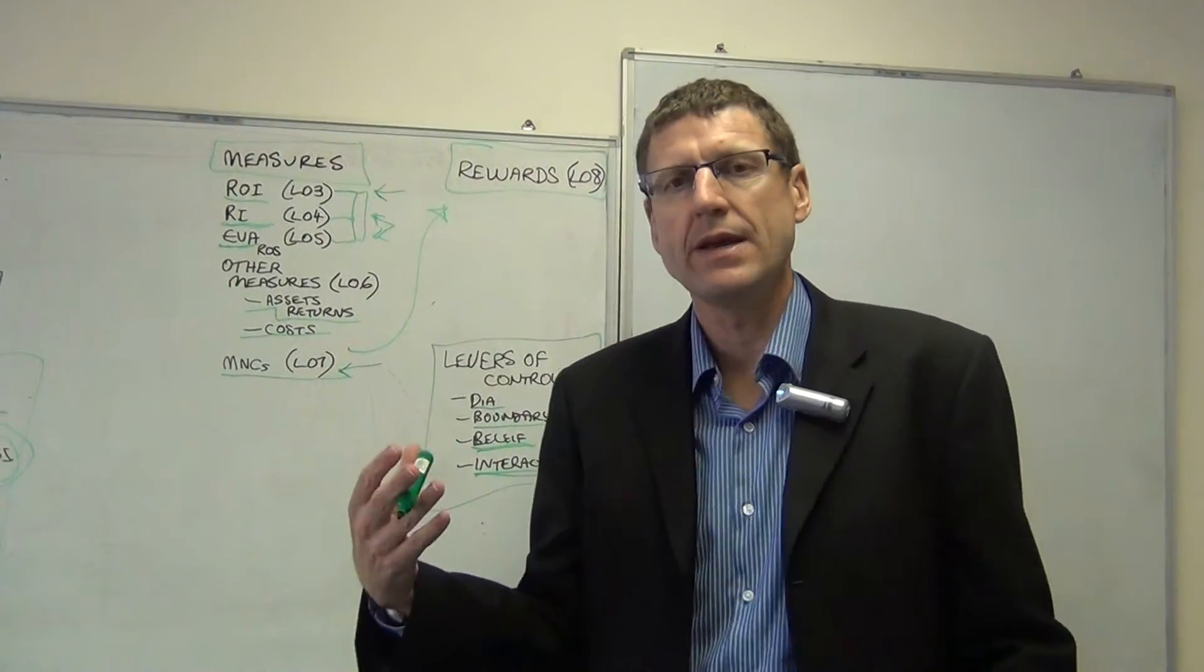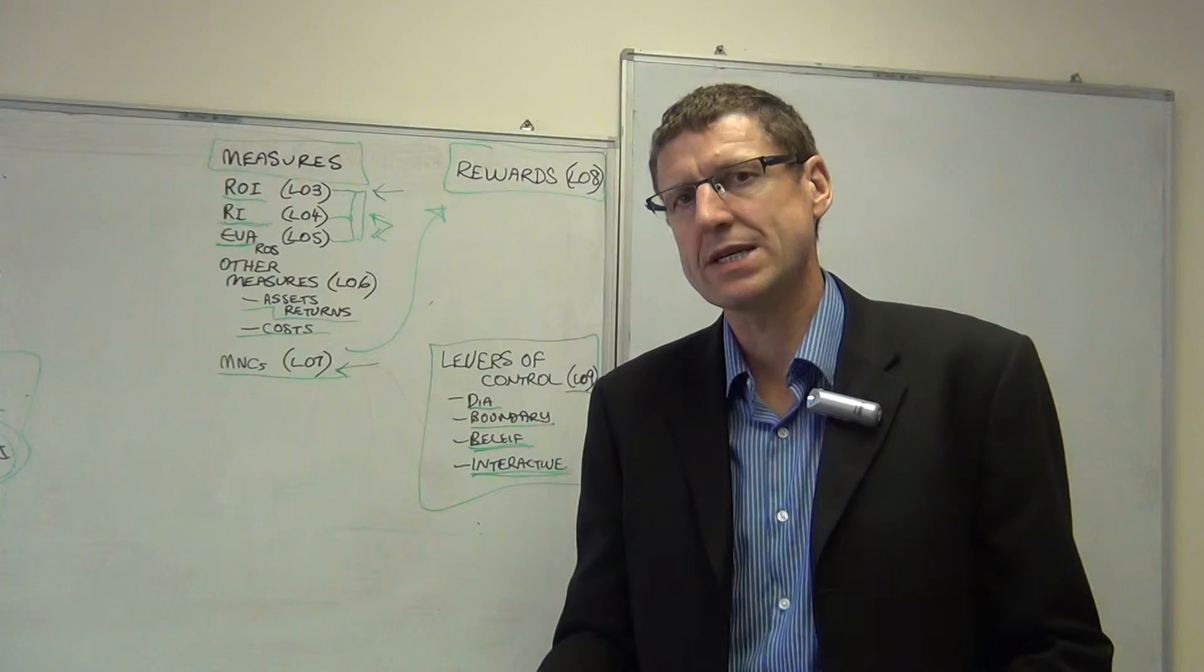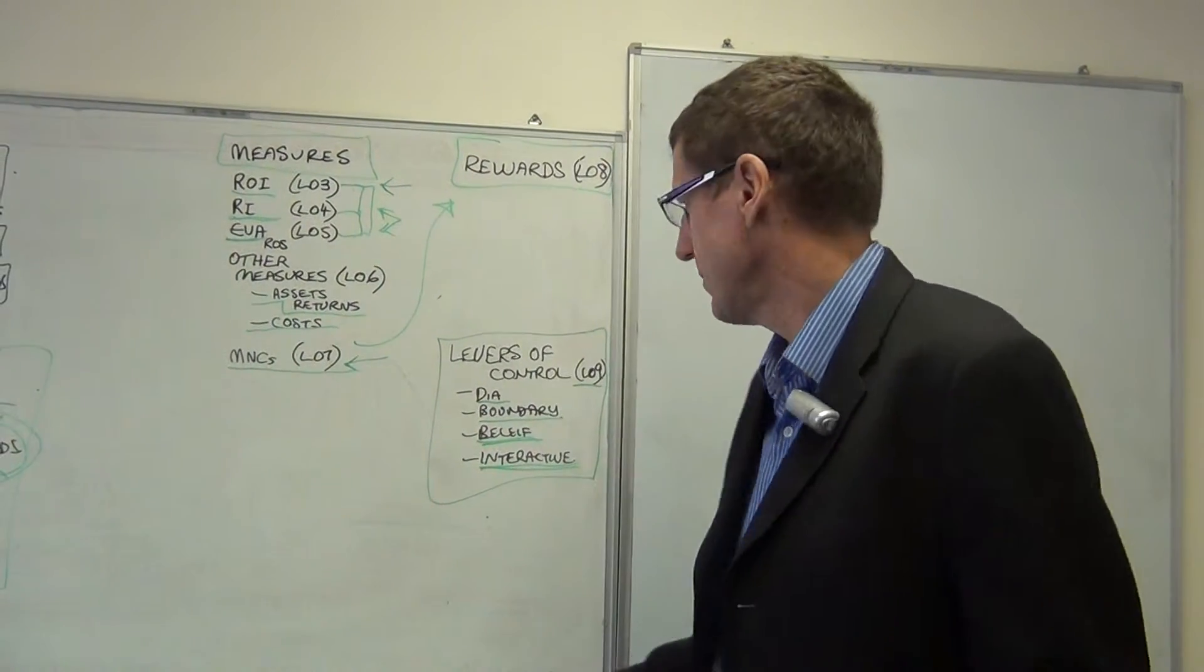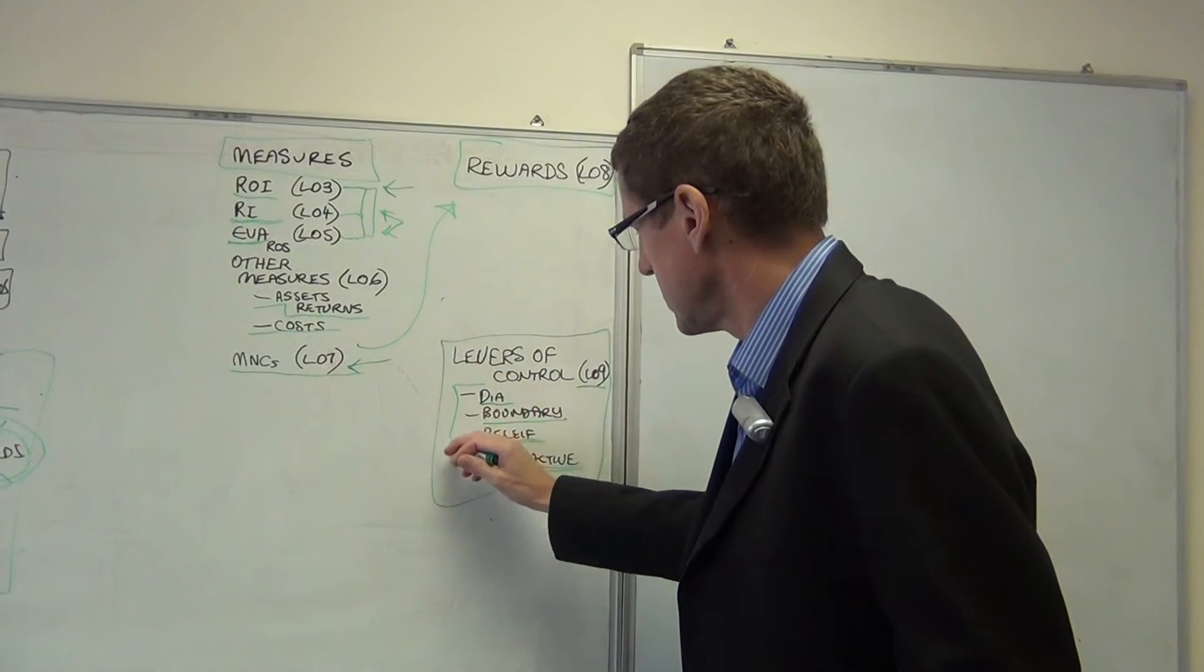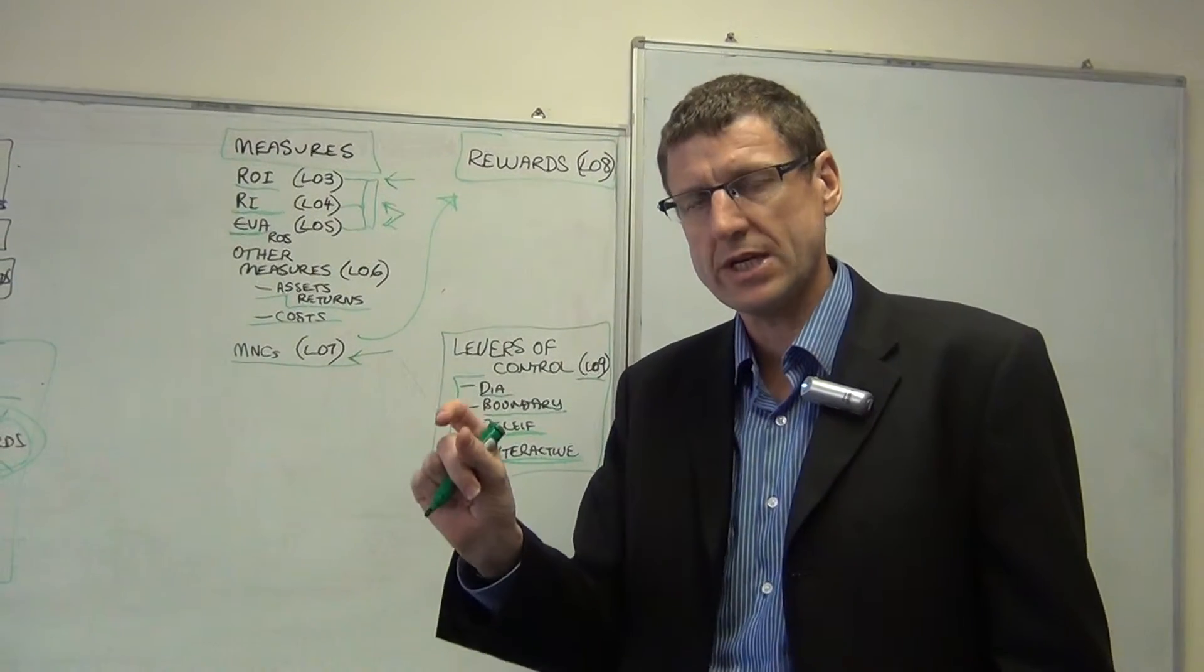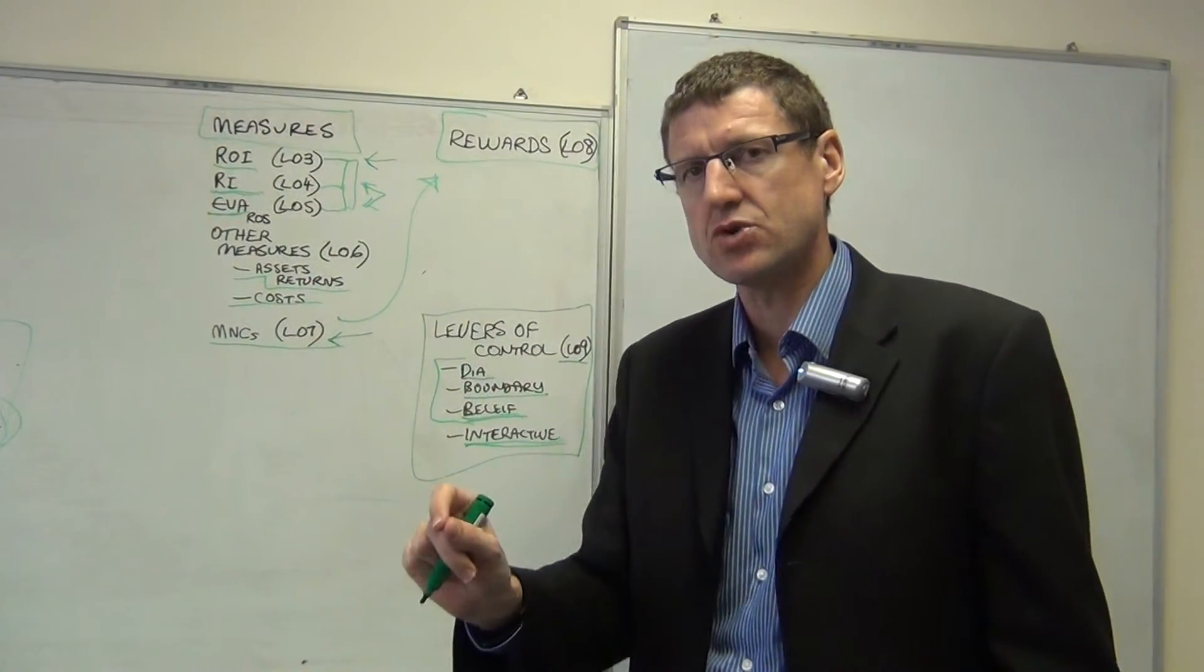How information systems are used interactively to achieve the organization strategy. In some ways, the first three types of controls are definable. When you go into the organization, you can see diagnostic controls, you can see boundary systems, and you can get a sense of the belief systems by talking to people about what's going on.